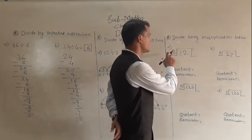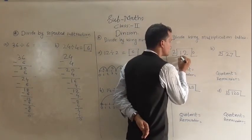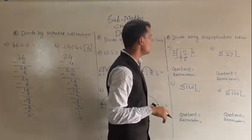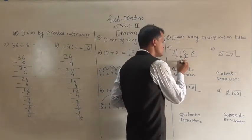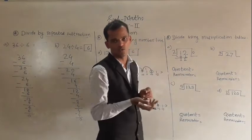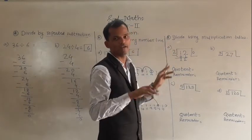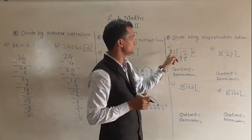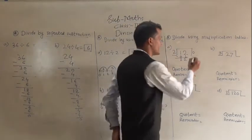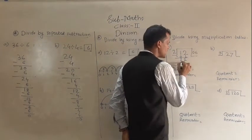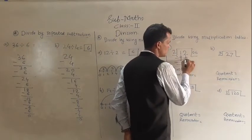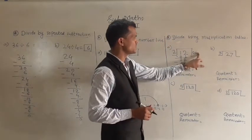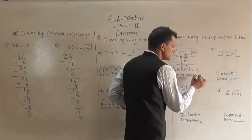See the first digit — it is smaller than 2. So write 0 here and subtract 0 from 1: 1 minus 0 is 1. Take the 2 down to get 12. Now check whether 12 is divisible by 2. In the table of 2, 12 comes: 2 sixes are 12. So write 6 here. 2 sixes are 12, then subtract: 12 minus 12 gives 0. So the quotient is 6 and the remainder is 0.